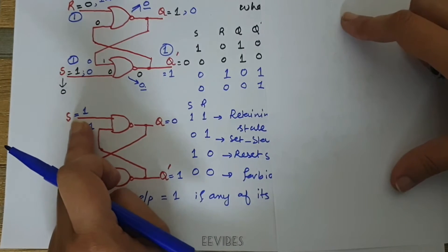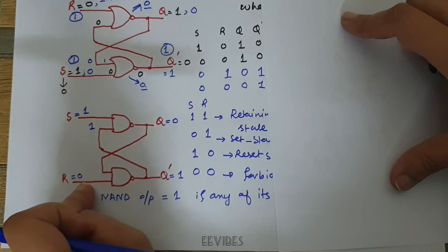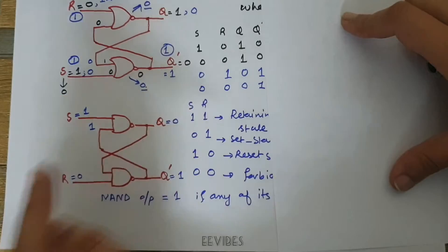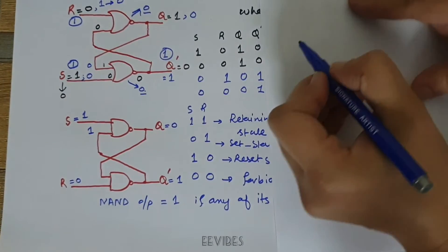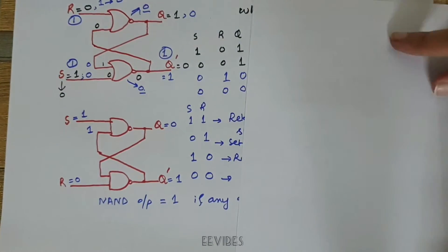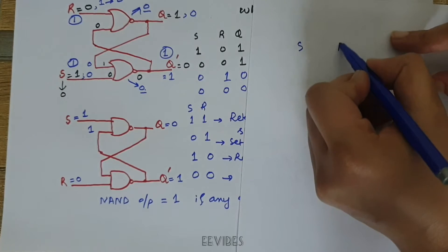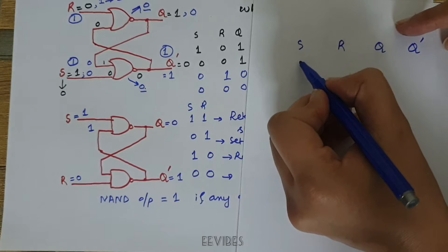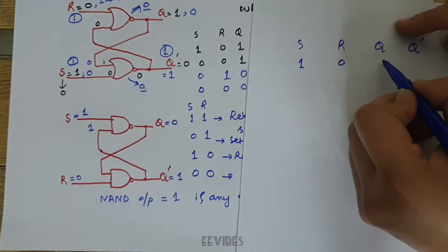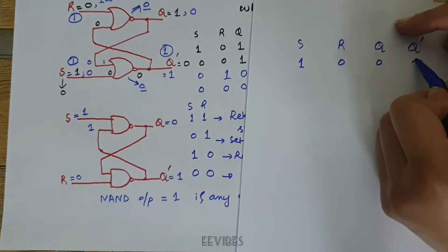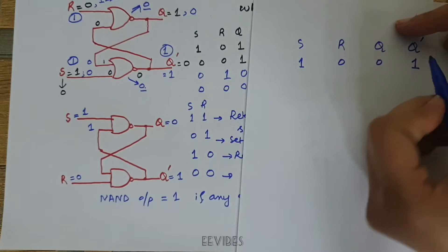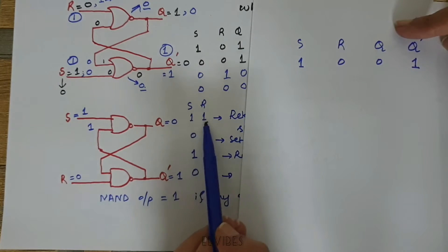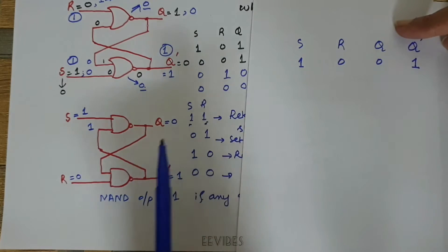So when S=1 and R=0, output Q is in the reset state. Let's draw the table for this. Here is the S input, R input, Q, and Q bar. When S=1 and R=0, output Q=0 and Q bar=1. As mentioned earlier, the 1,1 stage is called the retaining state.